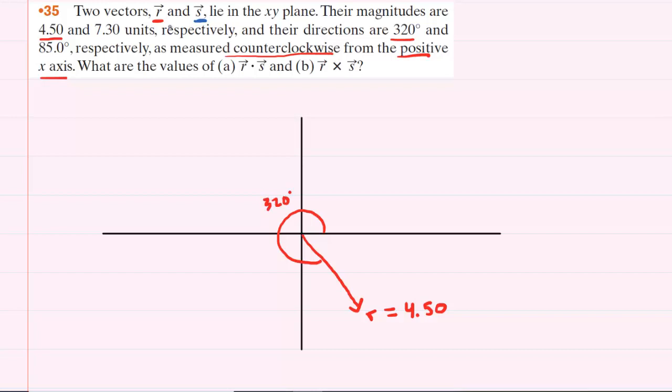Let's graph vector s. The magnitude is 7.3 and the angle is 85 degrees. So again measure from this positive x-axis and you're going to go out 85 degrees. Now 85 degrees would fall just short of 90, so maybe about right there.